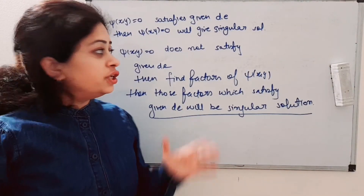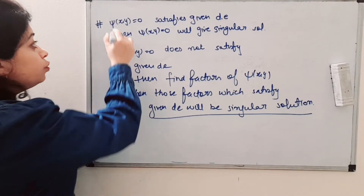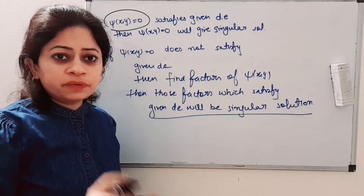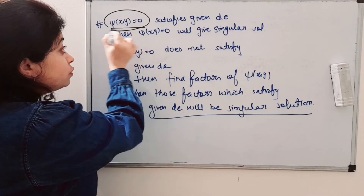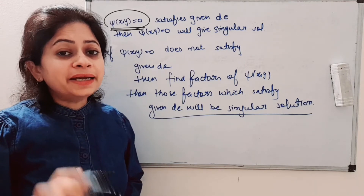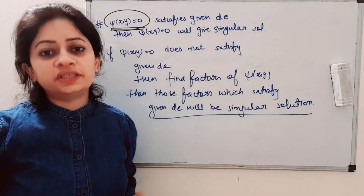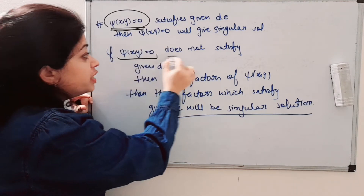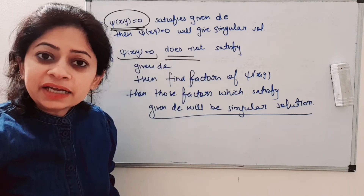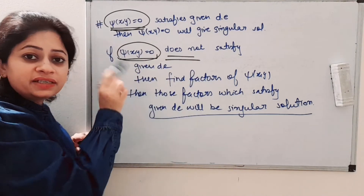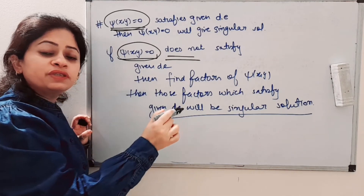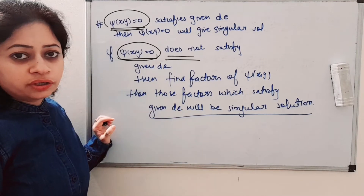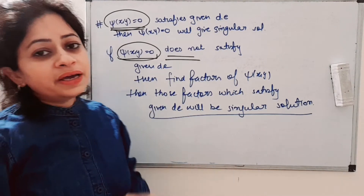One final result to note: if you get ψ(x, y) = 0 after elimination, check if that function satisfies the given differential equation. If it does, then that is the singular solution. If ψ(x, y) = 0 does not satisfy the differential equation, then factorize it. The factors which satisfy the given differential equation will constitute the singular solution. Now we come to examples.